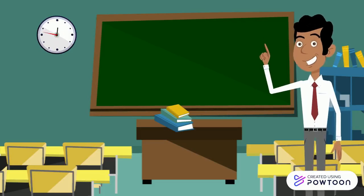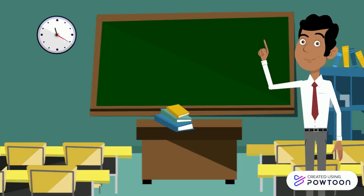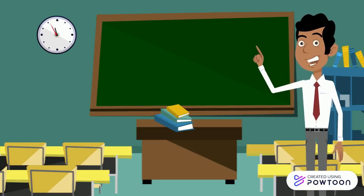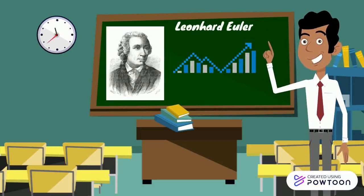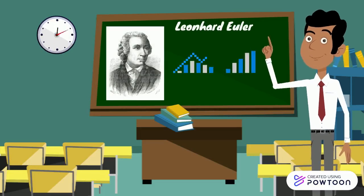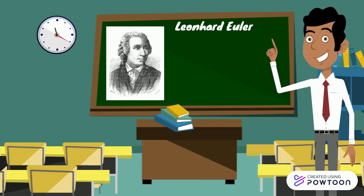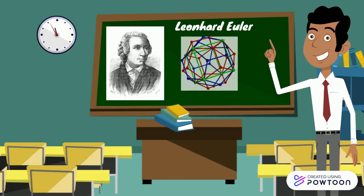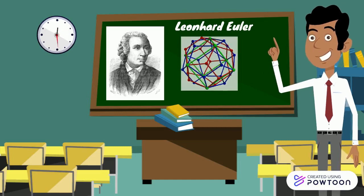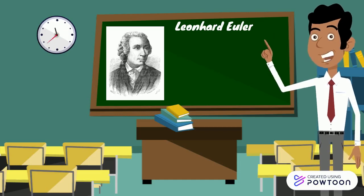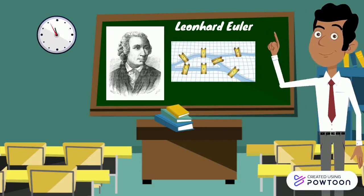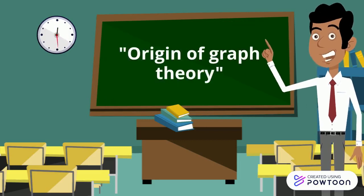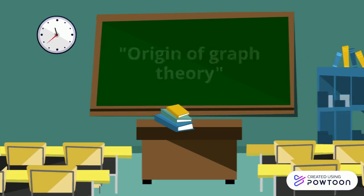Behind graph theory, there is a Swiss mathematician named Leonard Euler. He first introduced the basic idea of graphs. He is one of the most eminent mathematicians of the 18th century. His work on the famous Seven Bridges of Königsberg problem is commonly quoted as the origin of graph theory.